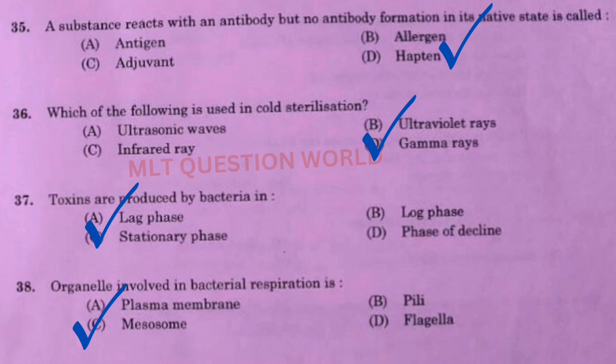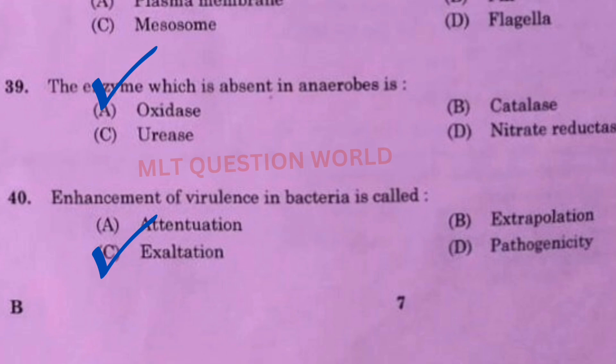Next one: The organelle involved in bacterial respiration is? The right answer is option C, mesosome. Next question: The enzyme which is absent in anaerobes is? The right answer is option A, oxidase. Next one: Enhancement of virulence in bacteria is called? The right answer is option C, exaltation.